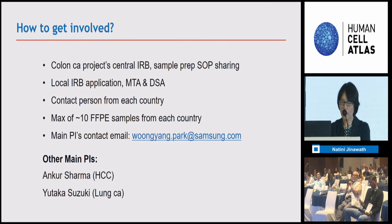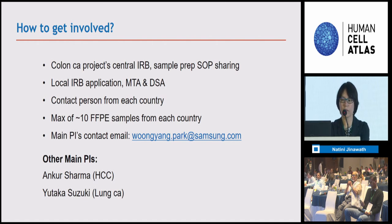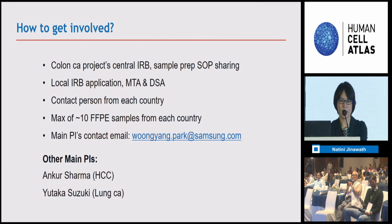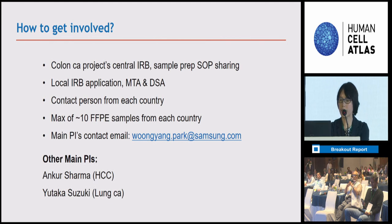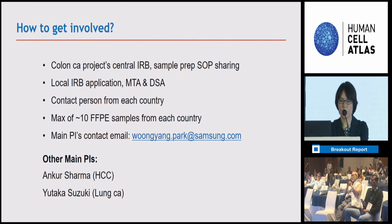For phase two, after phase one is complete, we plan to apply for large pharma or international funding agencies. We can add more research questions, more cancer types, or other multi-omics analysis. If spatial data has to be done on-site by each country, we can share the protocol and the data generated. To get involved in the colon cancer project, we need to form a central IRB protocol and sample prep SOP. Each country needs local IRB applications, MTA, and DSA. Maximum samples from each country would be around 10.